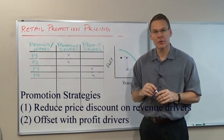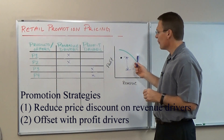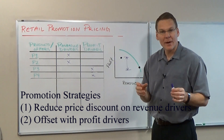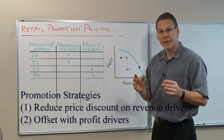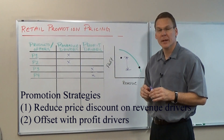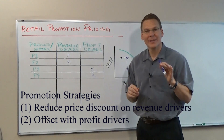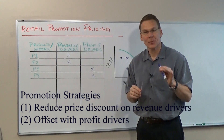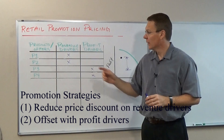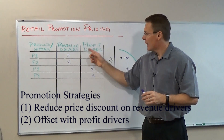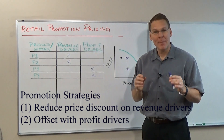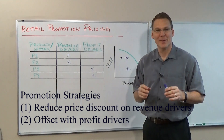One approach is to reduce the price of the revenue drivers. Another is to look at the profit drivers. The key is to identify which products and offers are revenue drivers and which are profit drivers, and balance the trade-off between them.